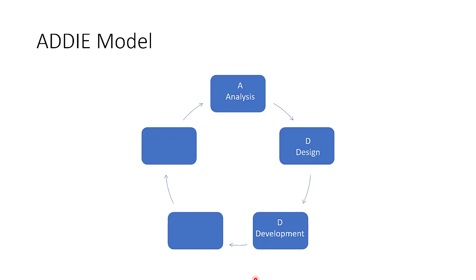When you are done with the design stage you move to the Development stage — the second D. At the development stage you work with what you have from the analysis and design and pull them together to develop the contents. You are putting flesh into the skeletal design.